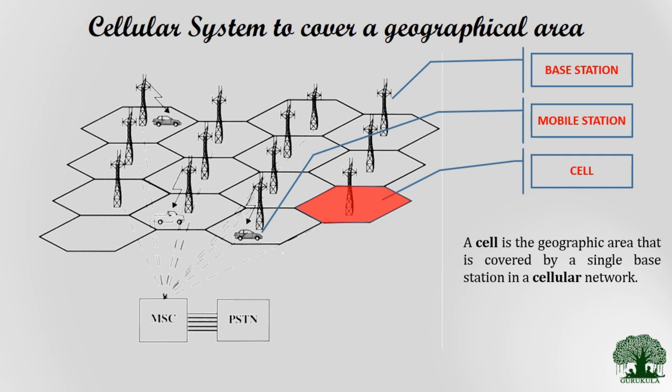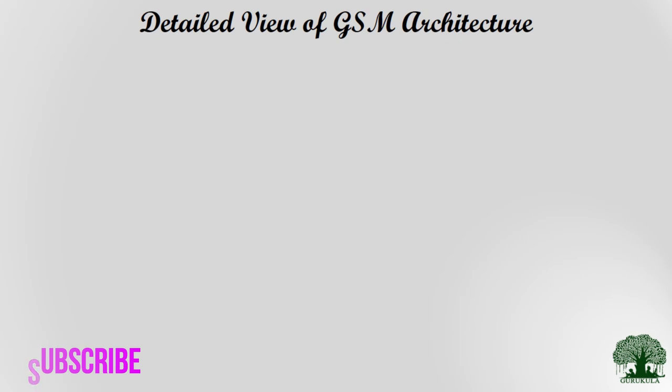This system divides a larger geographical region into small cells, each served by a particular base station. All signals collected from these base stations are forwarded to the MSC, which in turn forwards calls to the PSTN, routing them to the intended receiver. That covers the basic architecture and intent of GSM. There are several other components involved which we will look at in the next slide.